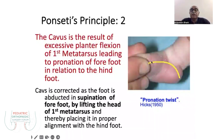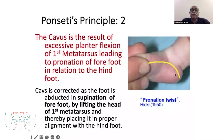In the first step, you have to correct this pronation twist. The cavus is corrected by abduction and supination of the forefoot, lifting the head of the first metatarsus. When you lift the head of the first metatarsus upward and in abduction, you correct the cavus deformity, and there is a simultaneous correction of the heel varus deformity.